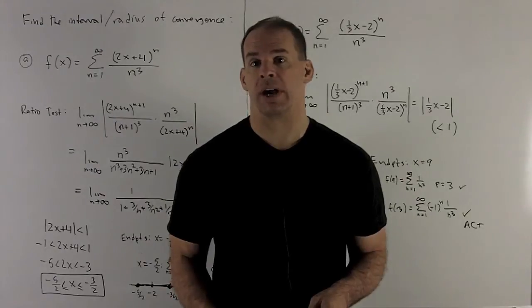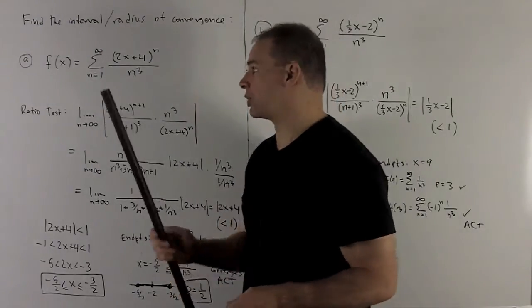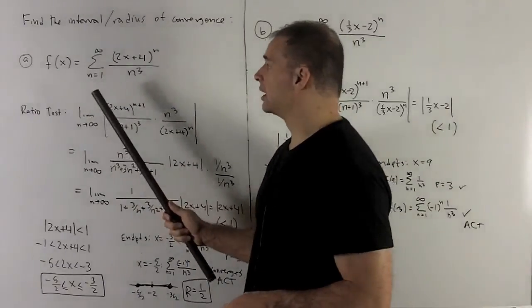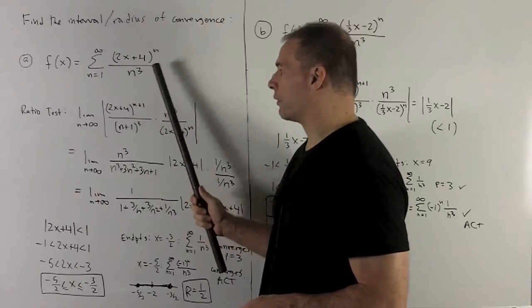Find the interval of convergence and the radius of convergence for the following power series. So my first one's going to be f of x, n going from 1 to infinity, 2x plus 4 raised to the n, over n cubed.